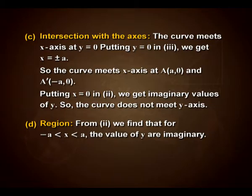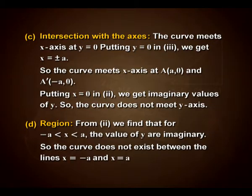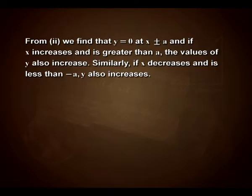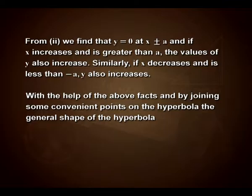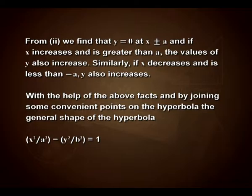Region: from the equation, for −a < x < a the values of y are imaginary, so the curve does not exist between the lines x = −a and x = a. Also, y = 0 at x = ±a, and if x increases beyond a, y also increases. Similarly, if x decreases below −a, y also increases. These facts define the general shape of the hyperbola x²/a² − y²/b² = 1.